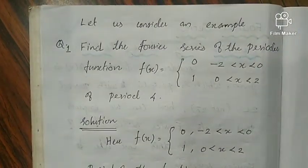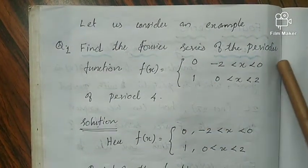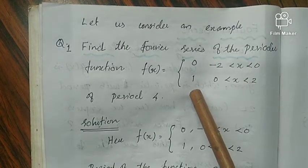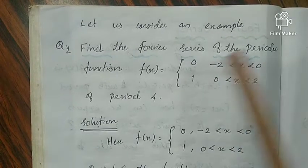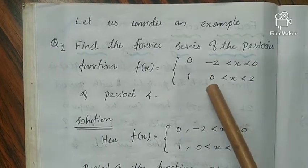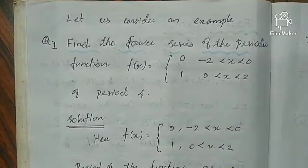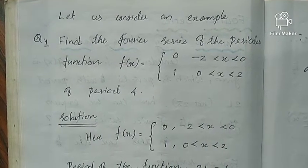Next is to find the Fourier expansion of a function given as f(x) = 0 if x is in the interval -2 to 0, and 1 if x is in the interval 0 to 2. So let us see how it can be solved.